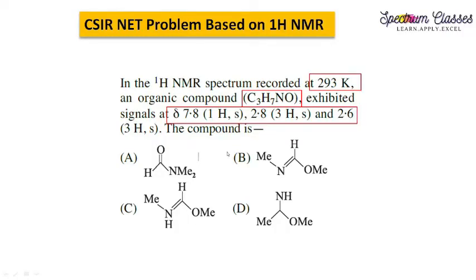Hello everyone, welcome back to Spectrum Classes. In this video we are going to solve one problem based on proton NMR. The question is: in the 1H NMR spectrum recorded at 293 Kelvin, an organic compound C₃H₇NO exhibits signals at δ 7.8 for one proton singlet, 2.8 for 3H singlet, and 2.6 for 3H singlet. The compound is—these are the options. We will take the highlighted values first and then solve the problem.